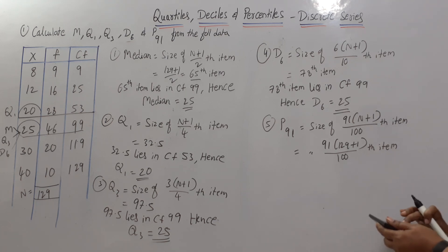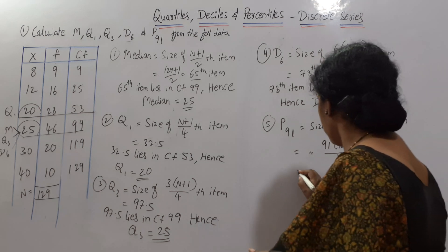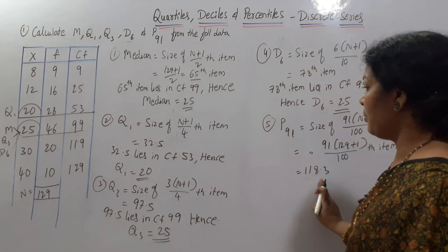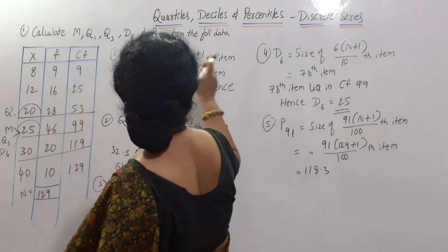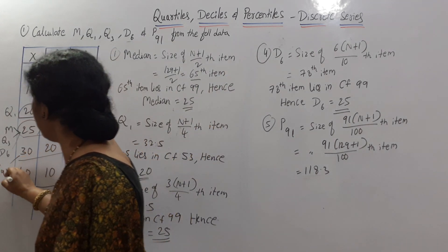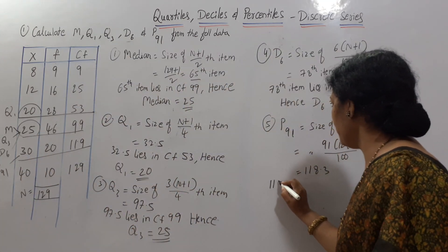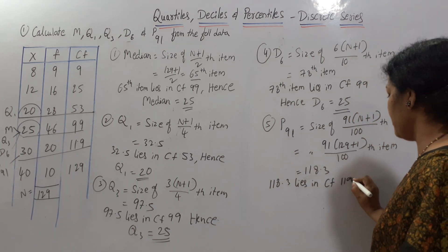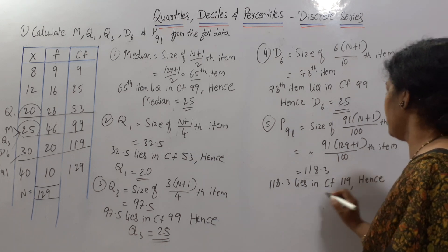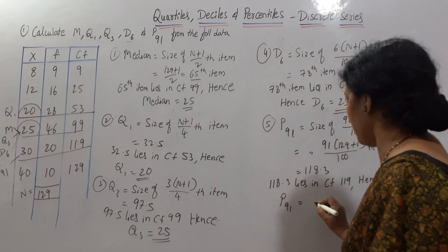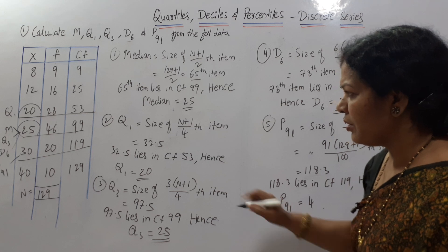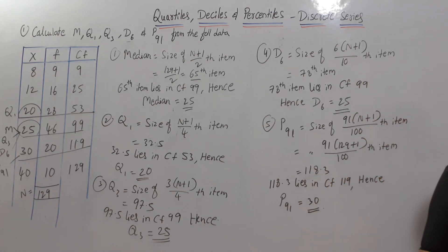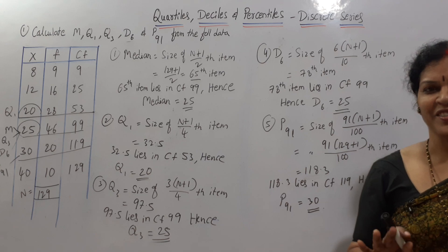130×91 divided by 100 gives 118.3. The 118.3th item lies in cumulative frequency 119, which corresponds to X = 30. Hence P91 = 30.